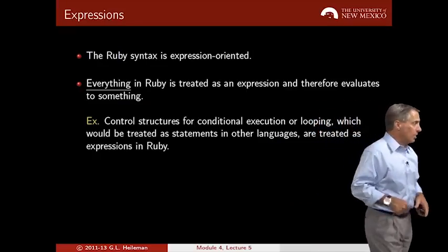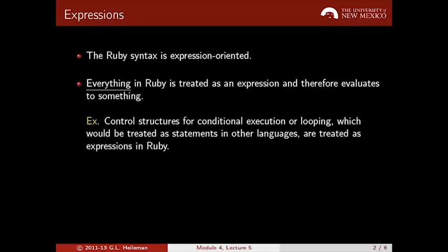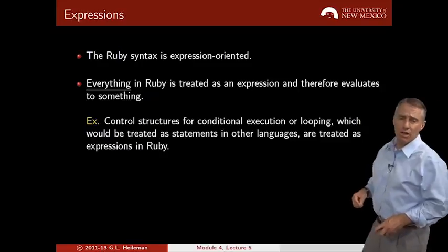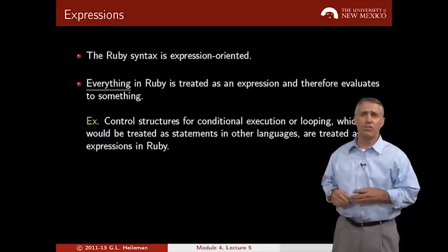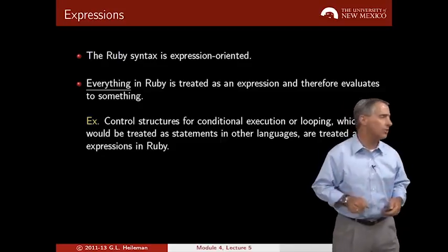As an example, the control structures for conditional and loop structures in other languages typically don't evaluate to anything. In Ruby, they have a value, and the value they assume is the last expression that's evaluated as a part of that structure. So if you go to IRB and type a quick if statement that I'll show you, you'll see that it actually evaluates to something. It returns a value.